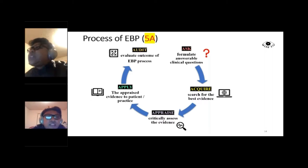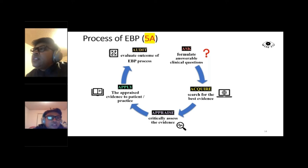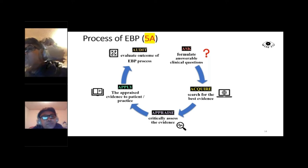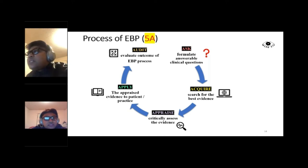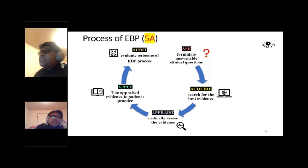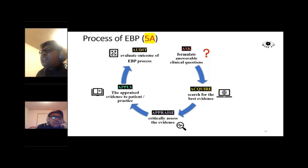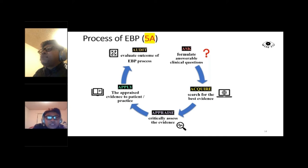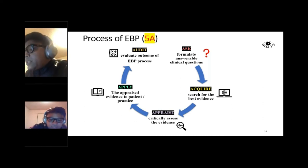Now I'll go through the process of evidence-based practice, which involves five A's — not in the context of disease management, but in evidence-based practice. The five steps are: first, Ask — formulate answerable clinical questions; second, Acquire — search for the best evidence; third, Appraise — critically assess the evidence; fourth, Apply — apply the appraised evidence to patient and practice; and fifth, Audit — evaluate the outcome of evidence-based practice. These form a cycle.